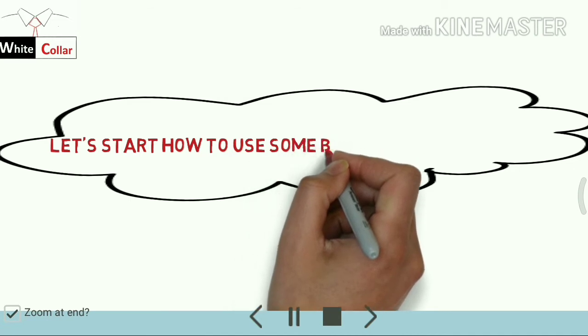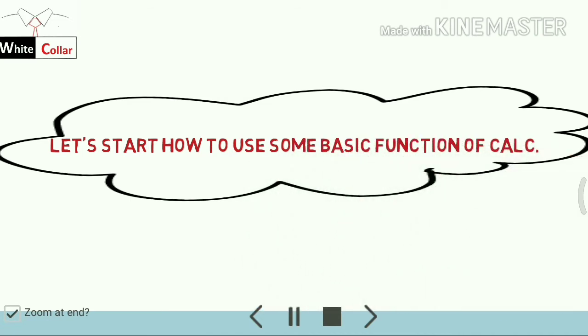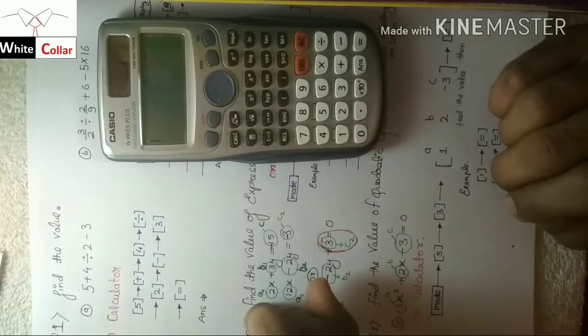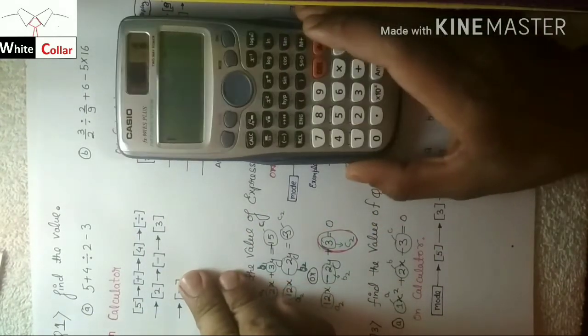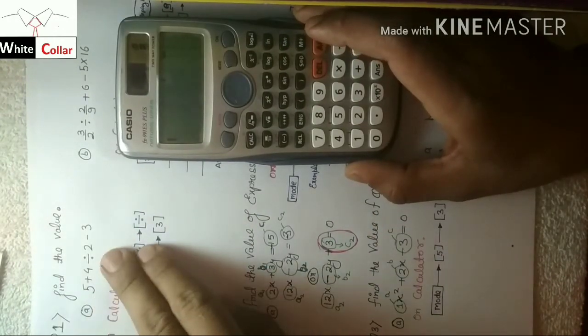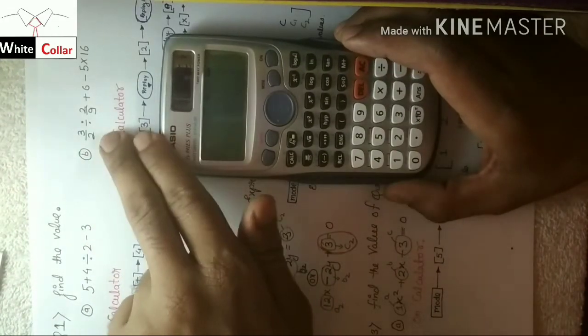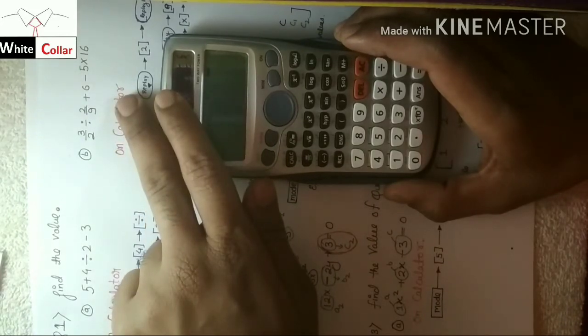Let's start to use some basic functions of the calculator. Let's start with the first question. Here we have two equations: 5 plus 4 divided by 2 minus 2, and the second equation is 3 divided by 2 divided by 2, divided by 9 plus 6 minus 5 into 16.